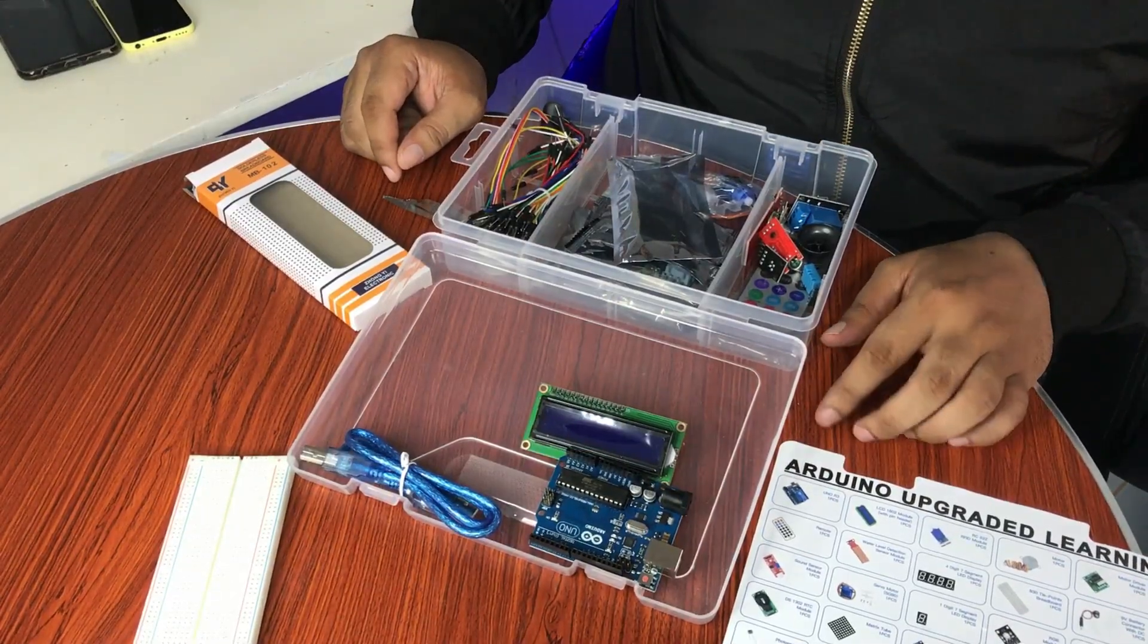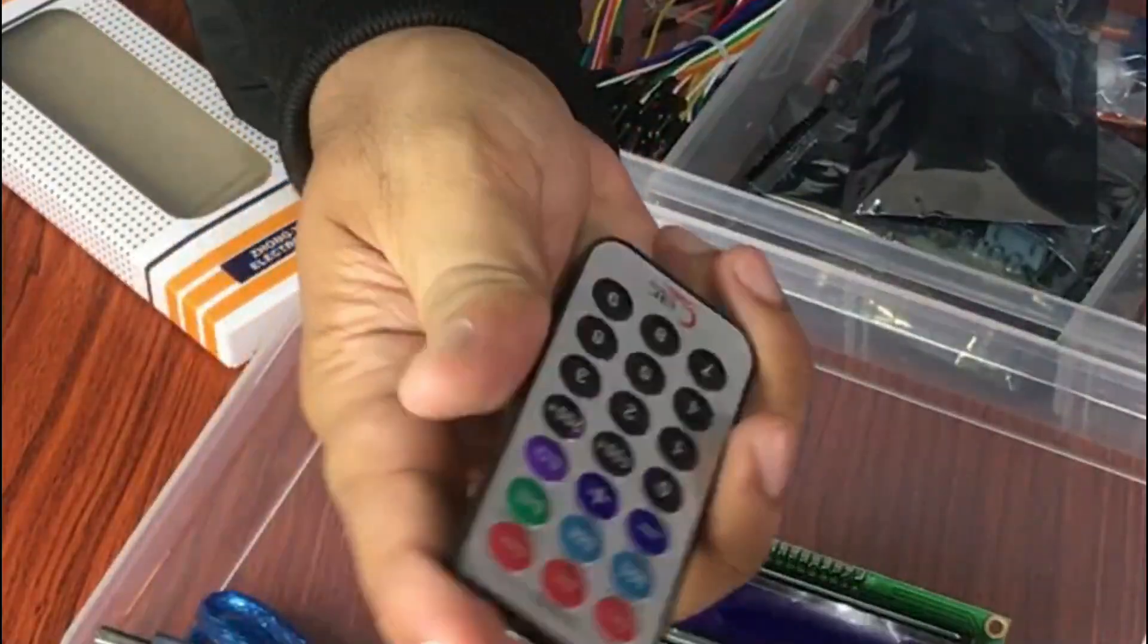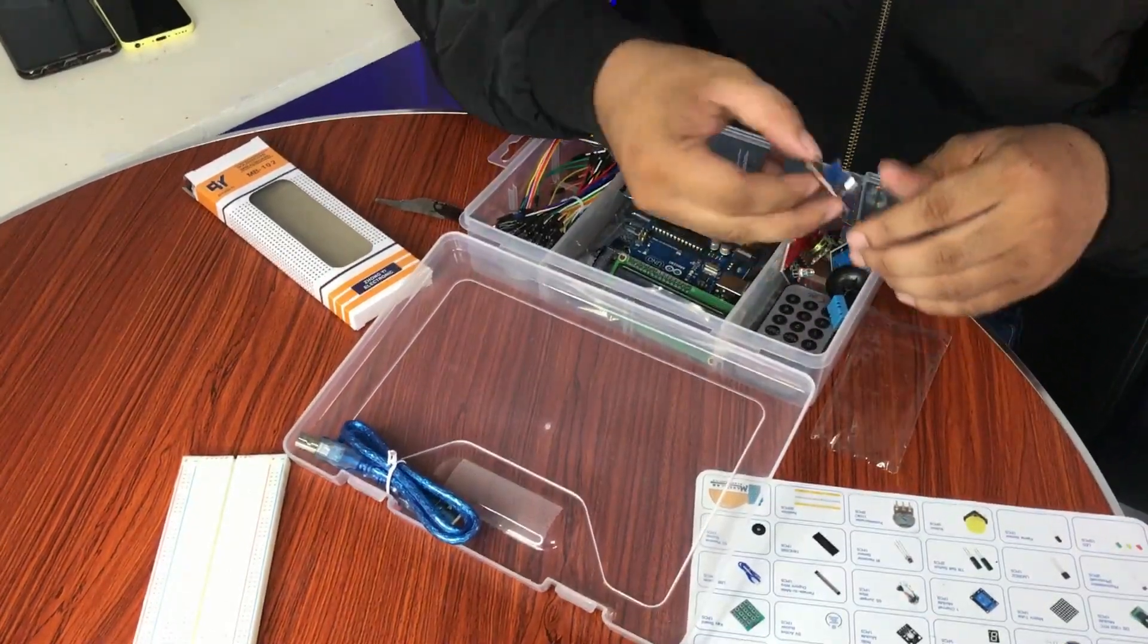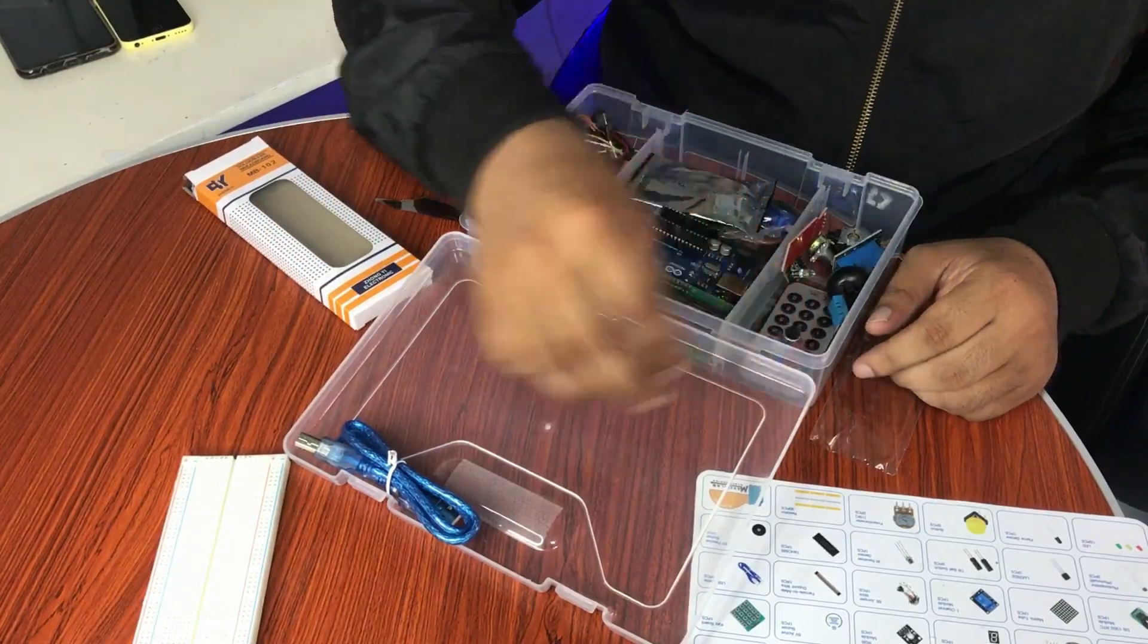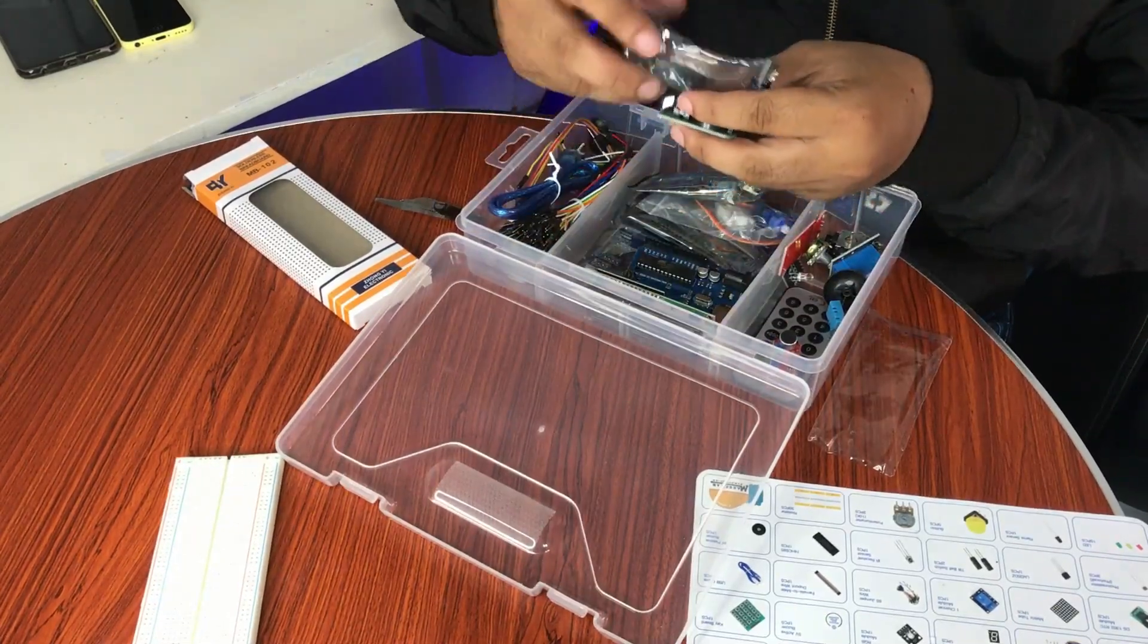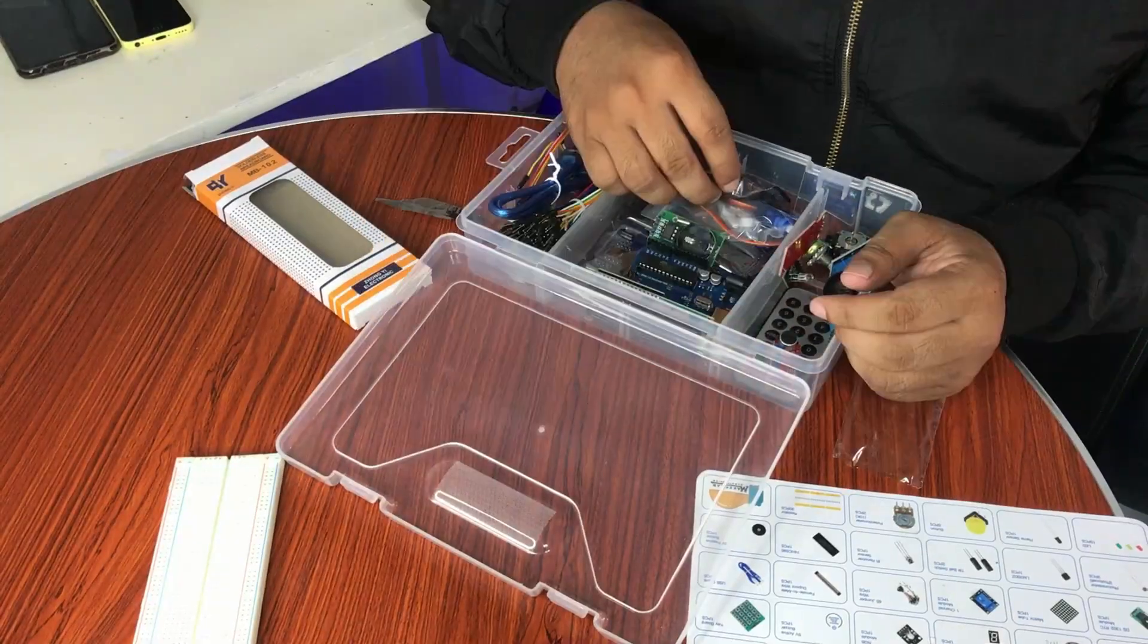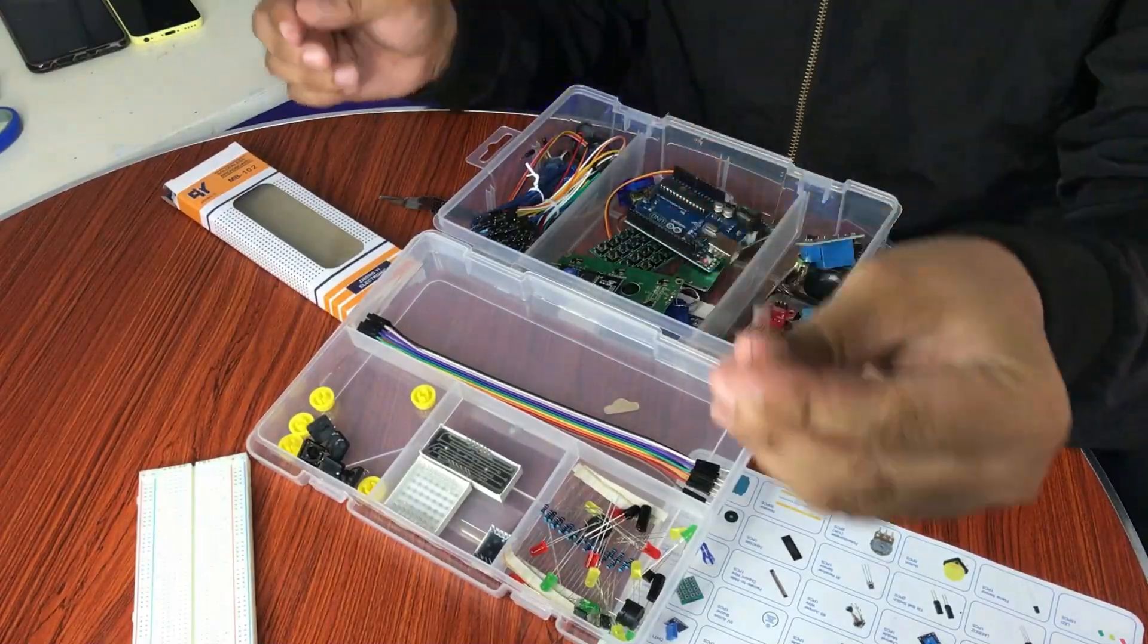We have here the remote, so this is the remote. Sound sensor, so this is the sound sensor. DS1302 RTC, so RTC stands for real-time clock. Photo resistor, it has a light dependent resistor.